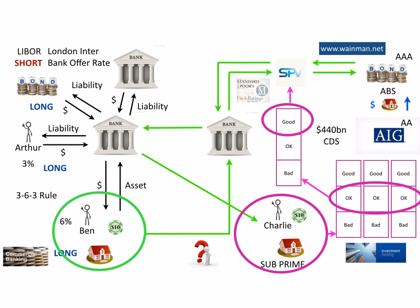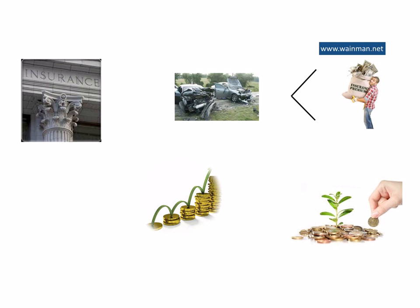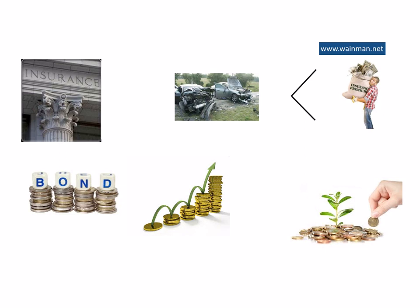AIG sold $440 billion of credit default swaps — a form of insurance on these products. An insurance company like AIG makes money in two ways: first, by ensuring premiums collected exceed claims paid out and operating costs — the technical or underwriting result; and second, by investing the premiums before paying out claims — the non-technical result. Insurance companies do not invest in high-risk securities such as shares, as these are too volatile. So they invest in bonds — specifically those with a triple-A rating. Thus the insurance companies were investing in the very products they were insuring.